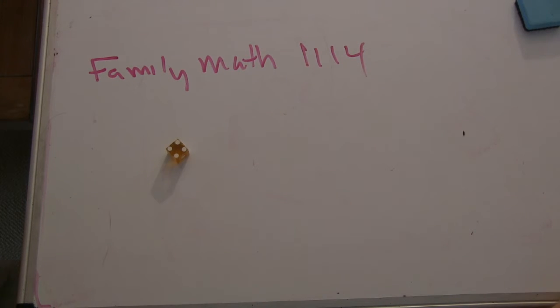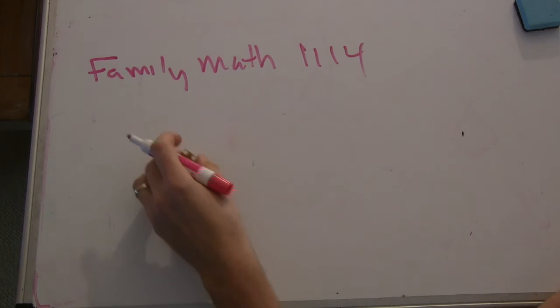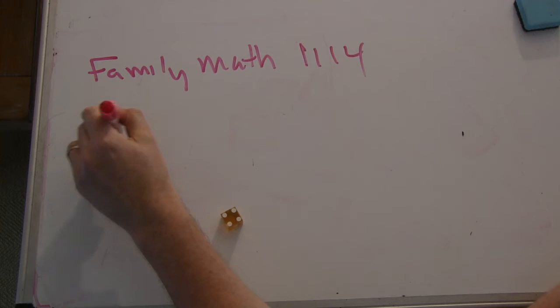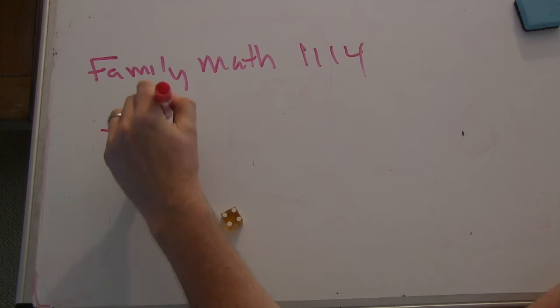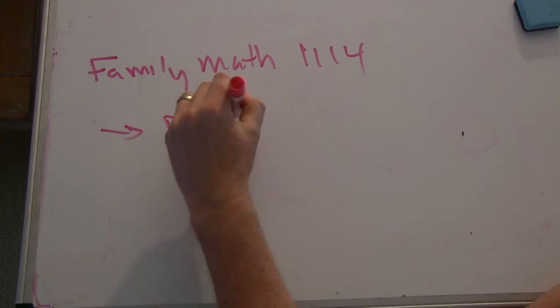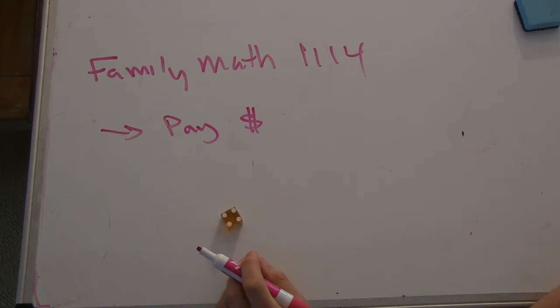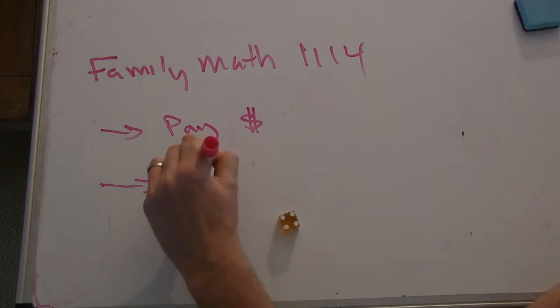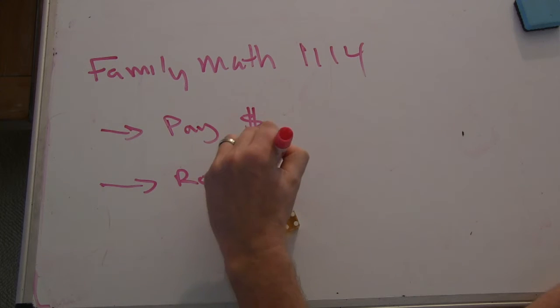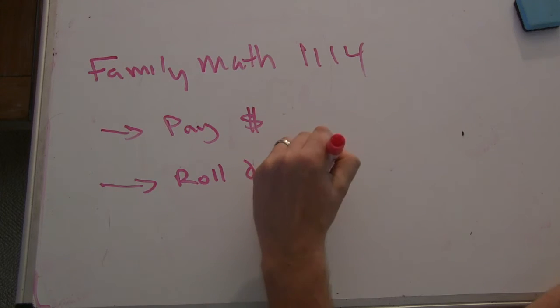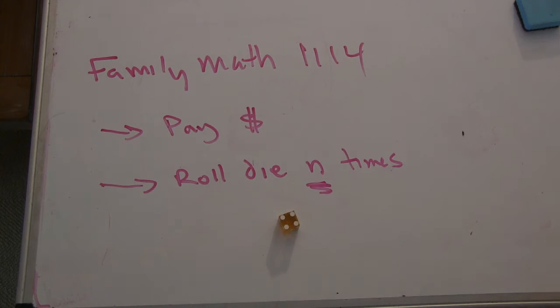So I heard an interesting game today from a journalist named Felix Salmon. Maybe we'll zoom in on the die when it comes. So here's what the game is. You pay a certain amount of money, whatever you decide. And then you roll the die n times. And also, you decide n.